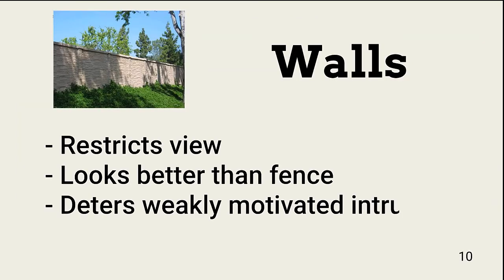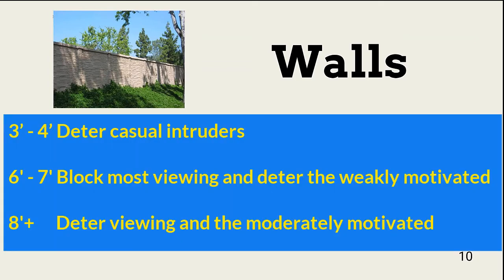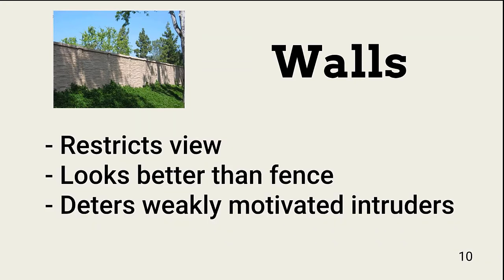Site perimeter walls, without any top deterrent like barbed wire, are a good next-level deterrent. Walls are good for restricting views when an organization does not want passers-by to see what is happening on the site. It's also considered a better choice when fencing is inappropriate for the neighborhood or for customer perceptions. Wall height depends on what an organization is trying to accomplish: three to four feet deters casual intruders; a six to seven foot wall blocks viewing and deters weakly motivated intruders; an eight-foot or more wall deters viewing and the moderately motivated. Areas requiring higher deterrence require a top guard, which is discussed in a later slide.